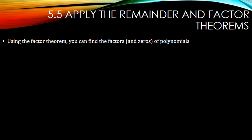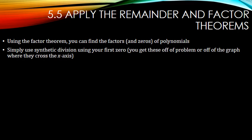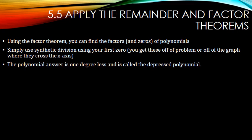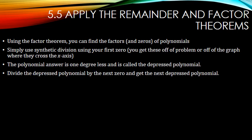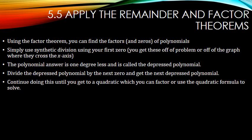Using the factor theorem, you can find the factors and zeros of polynomials. Simply use synthetic division using your first zero — you get these from the problem or from the graph where it crosses the x-axis. The polynomial answer will be one degree less, the depressed polynomial. Then divide the depressed polynomial by the next zero to get the next depressed polynomial, and continue until you get a quadratic that you can factor or solve with the quadratic formula.